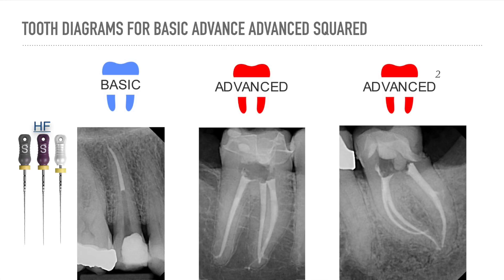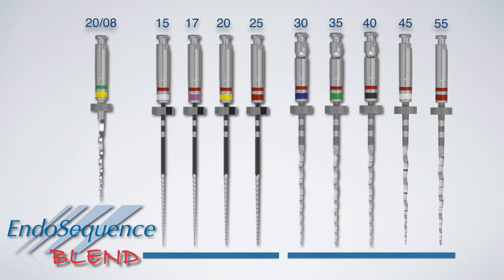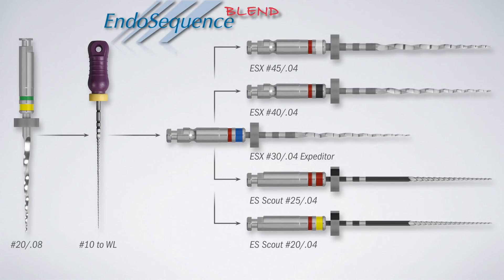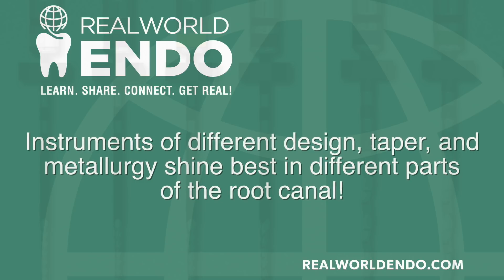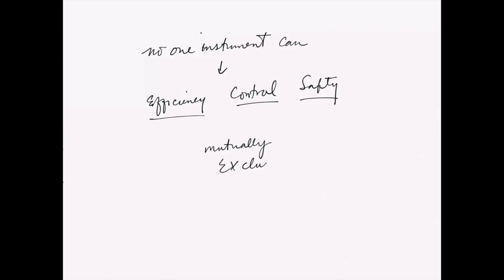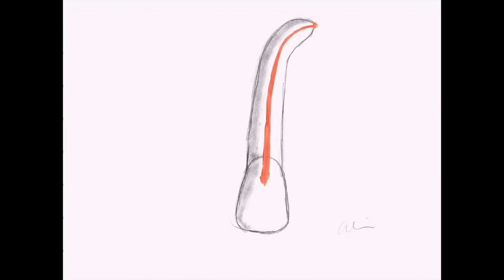What I was referring to as the ESX advanced squared technique is what we now call the EndoSequence Blend Protocol — a universal protocol that helps deal with all kinds of cases, whether simple or advanced. To fully understand it, we need to grasp the core concept: instruments of different design, taper, and metallurgy shine best in different parts of the root canal. No one instrument can achieve the same level of efficiency, control, and safety — three separate and at times mutually exclusive variables — in all parts of the root canal simultaneously.